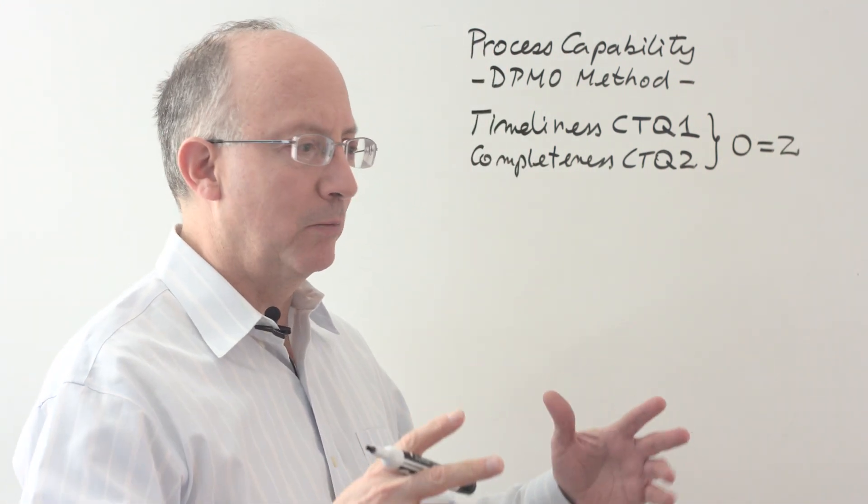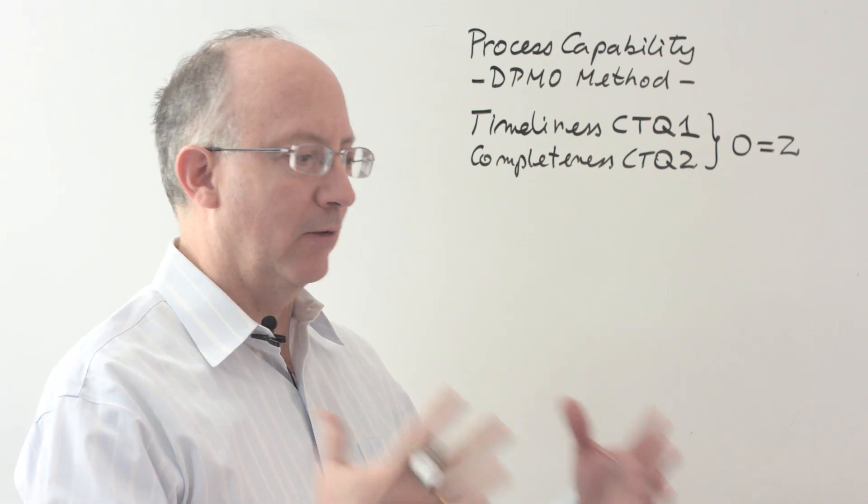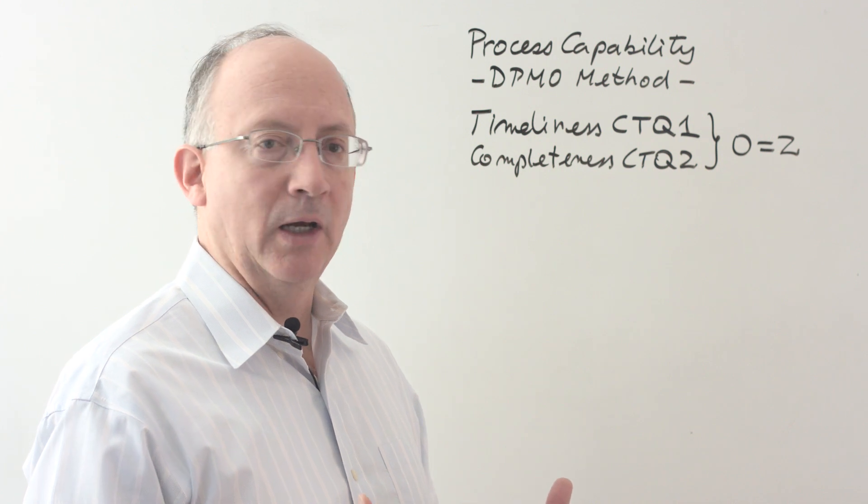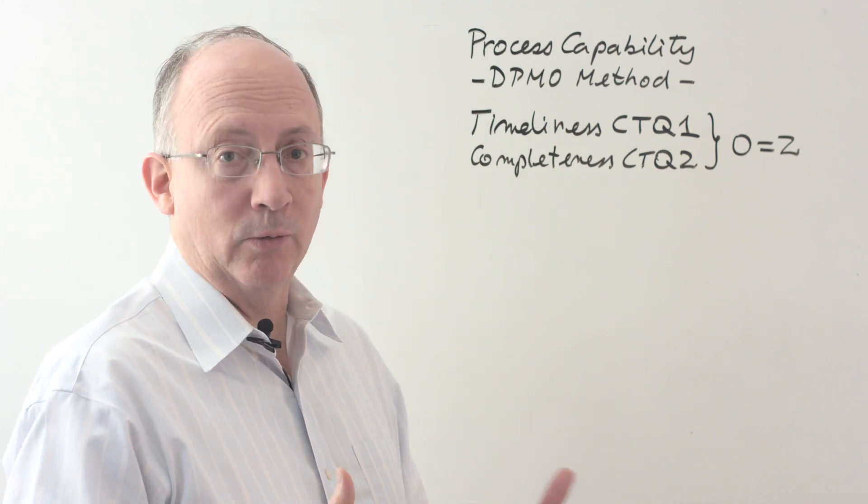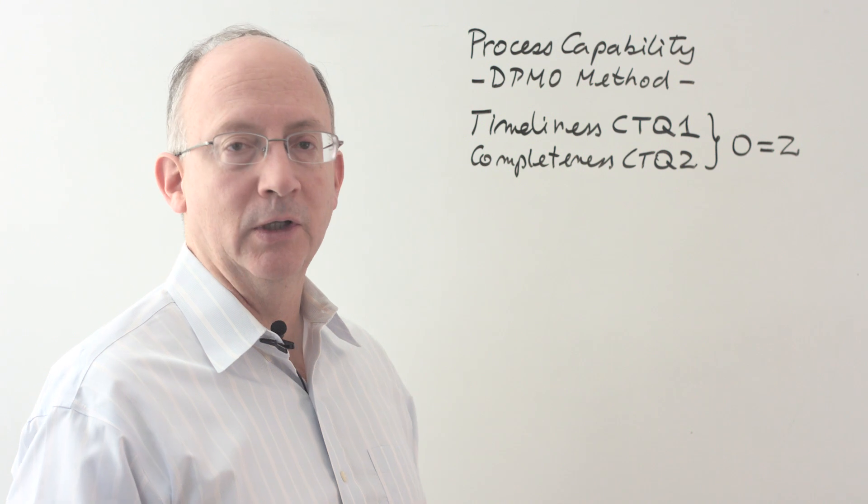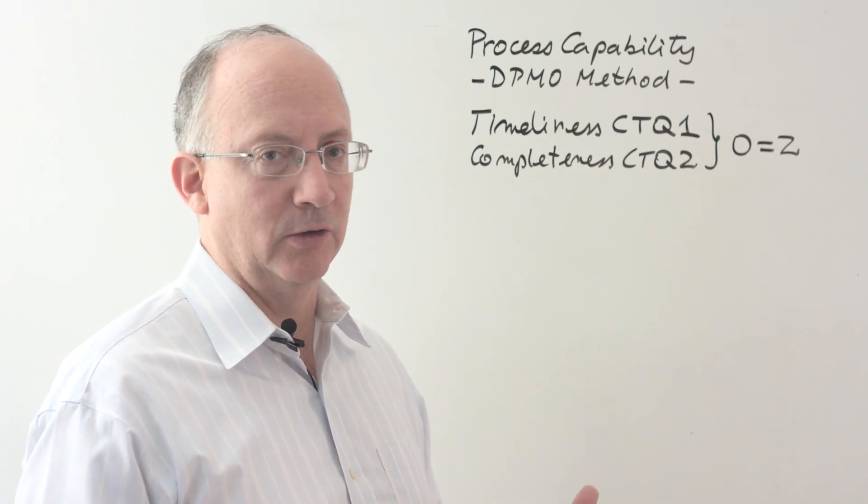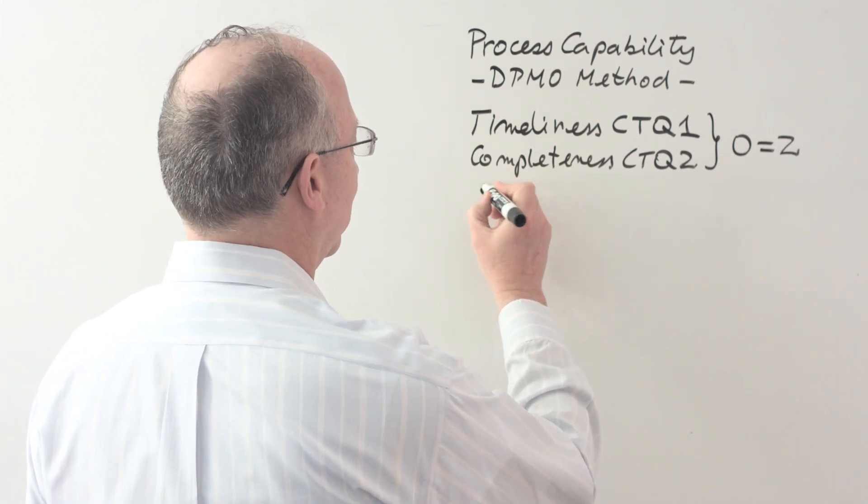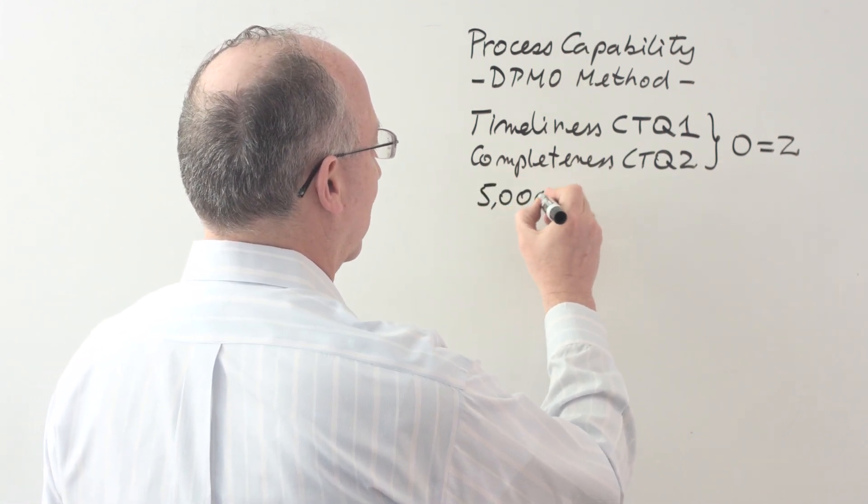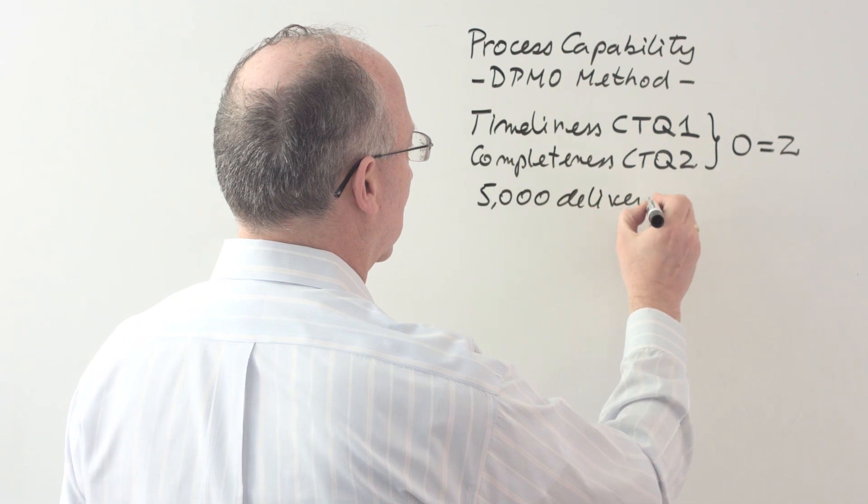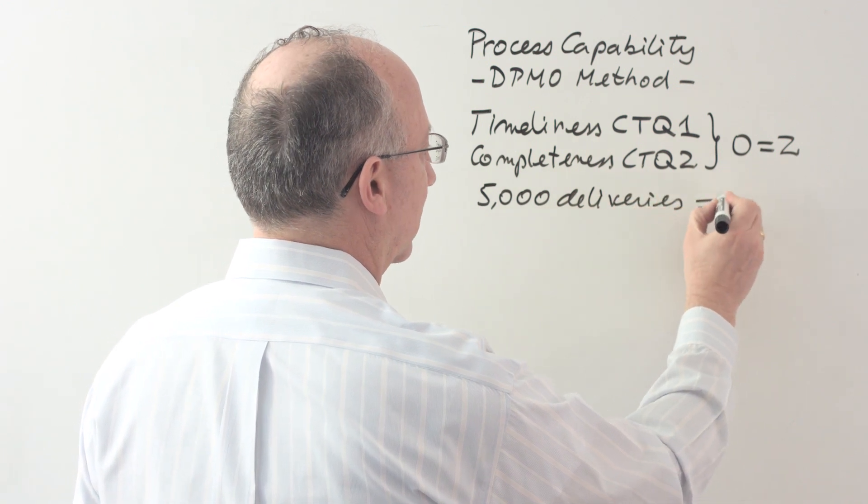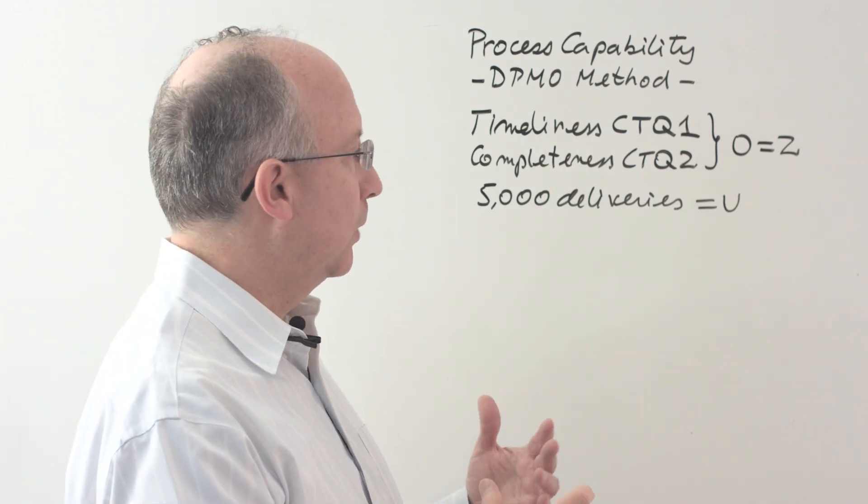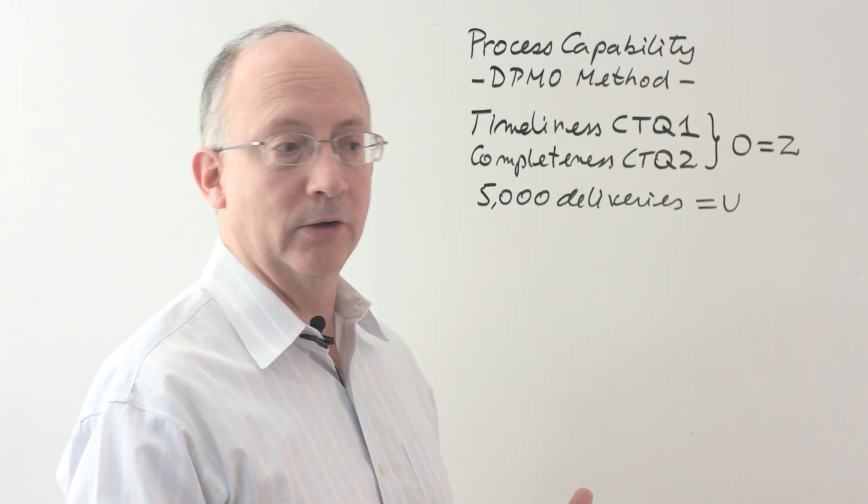Now, let's say that we're trying to set a baseline. We're managing an area of multiple pizza shops and branches and we want to know how we're doing. Let's say we're going to conduct a quality study over 5,000 deliveries in the next couple of weeks. Those 5,000 deliveries are going to be what we're going to call the number of units in the formula.